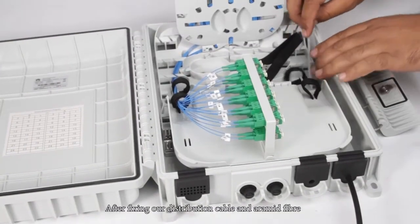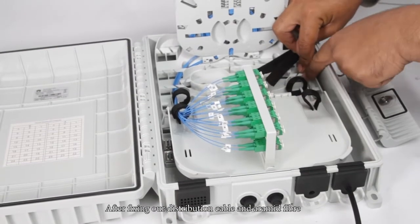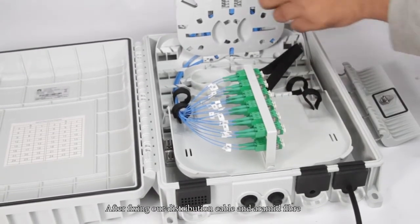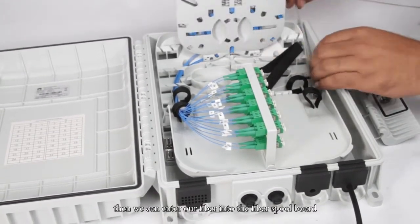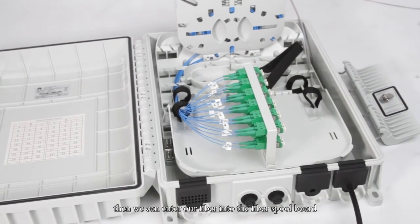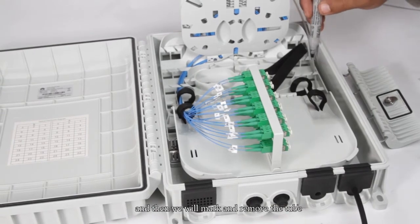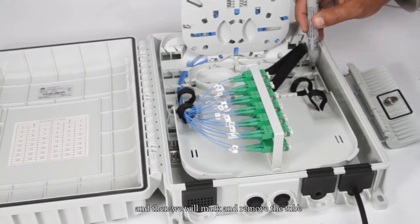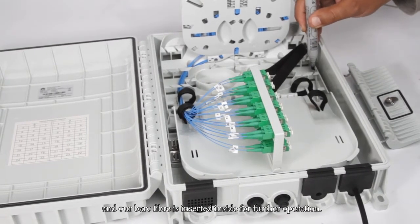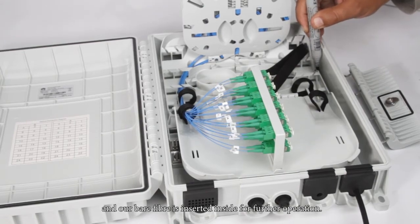After fixing our distribution cable with the cable ties and aramid fiber, then we can enter our fiber into the fiber special bolt and then we will mark it underneath the fiber spark to remove the tube and our fiber.